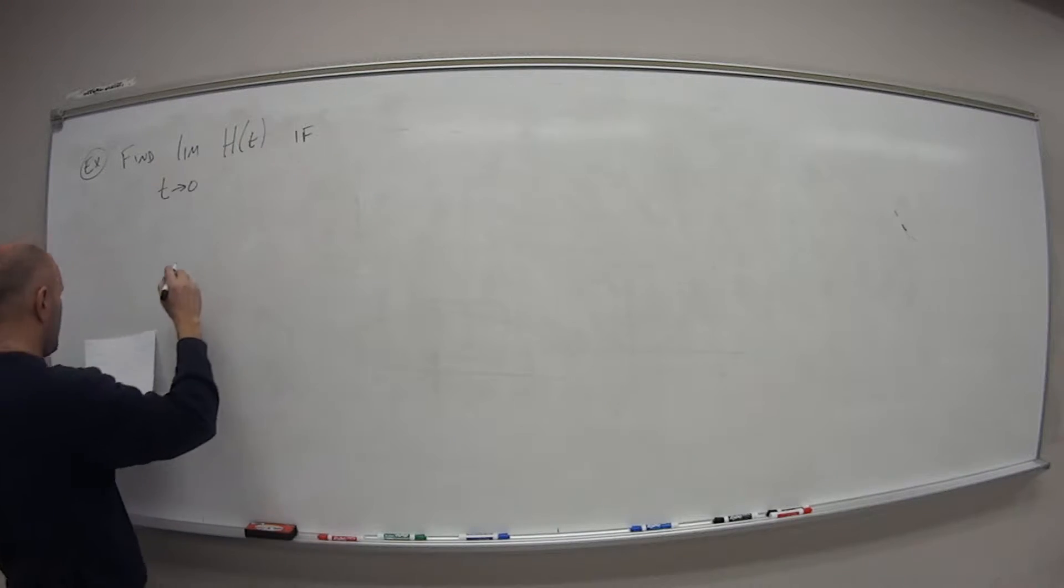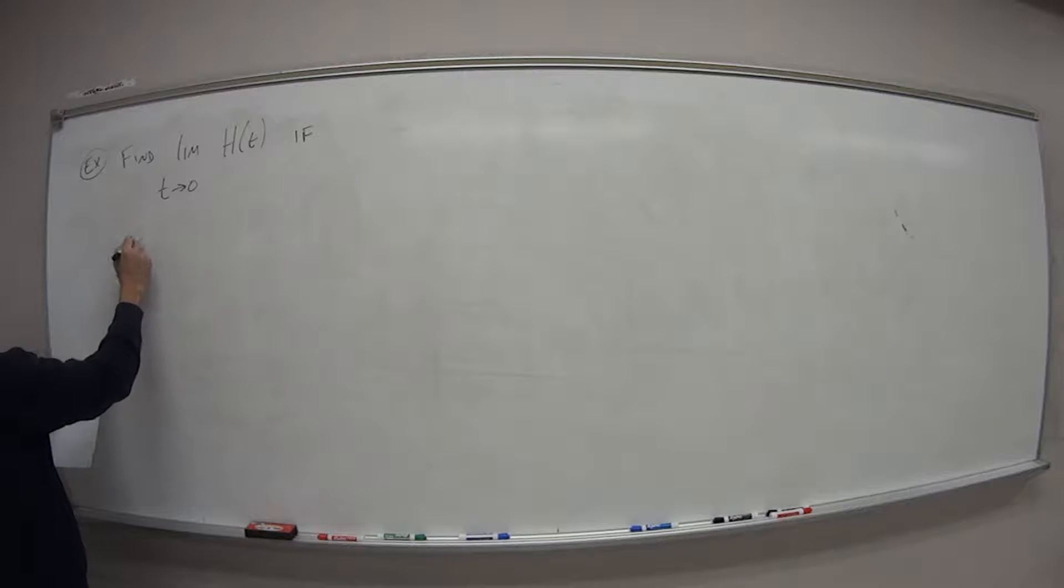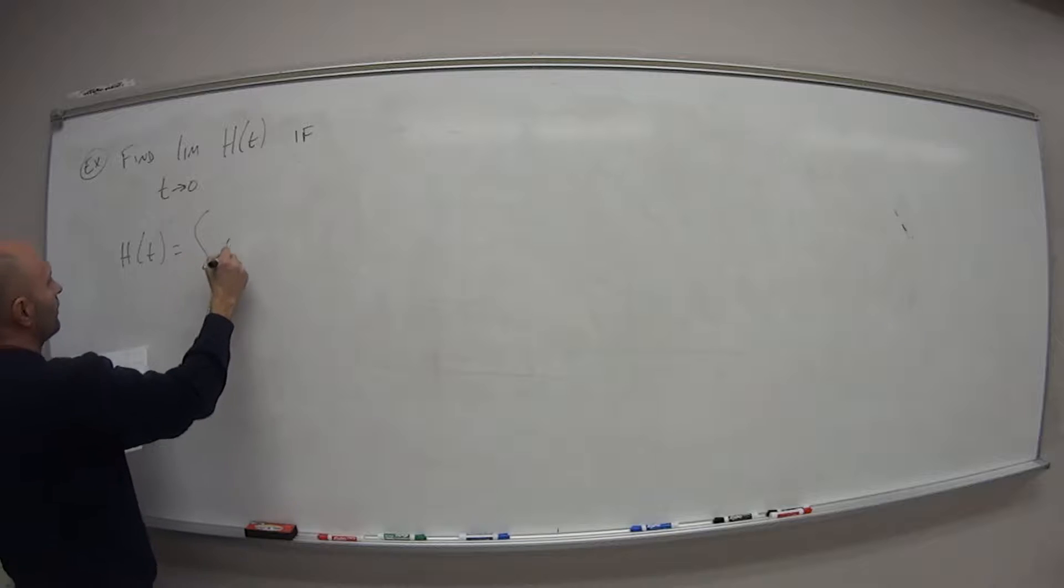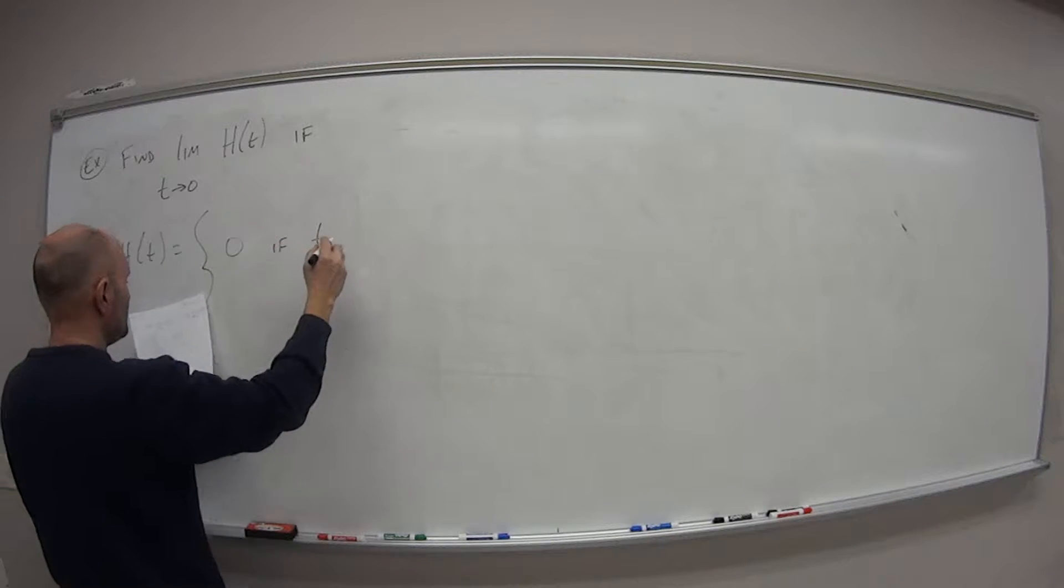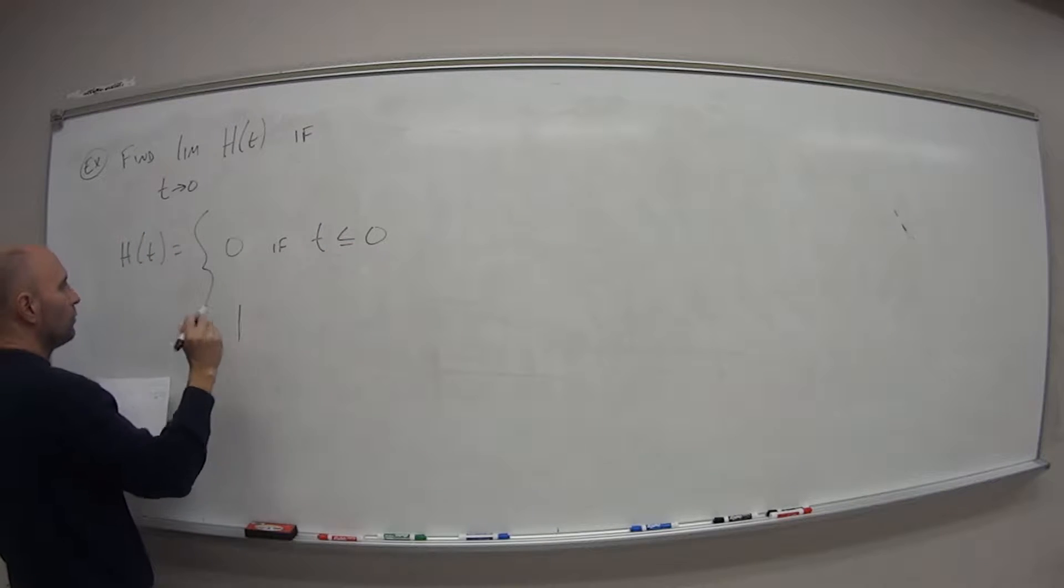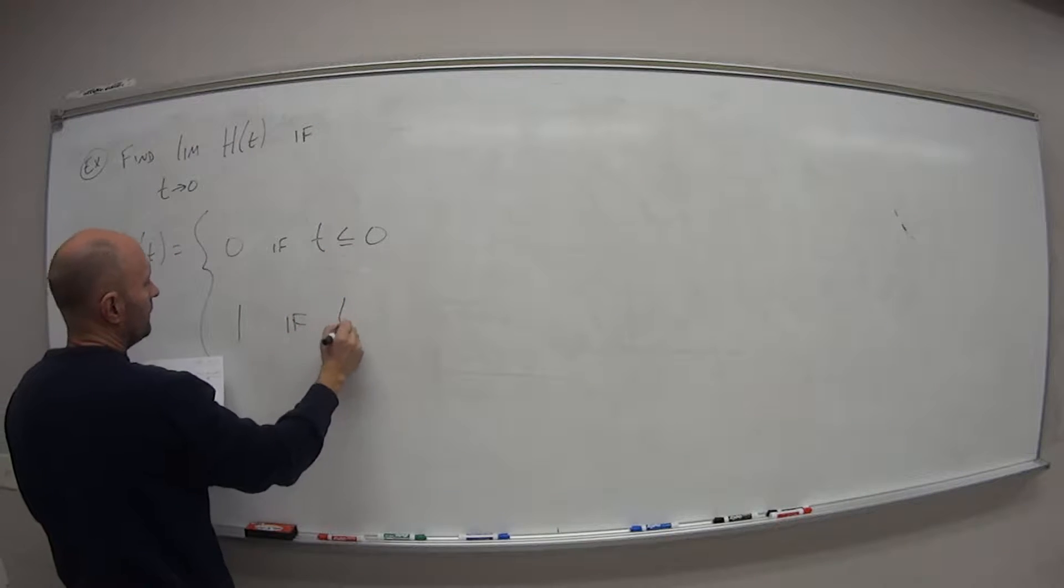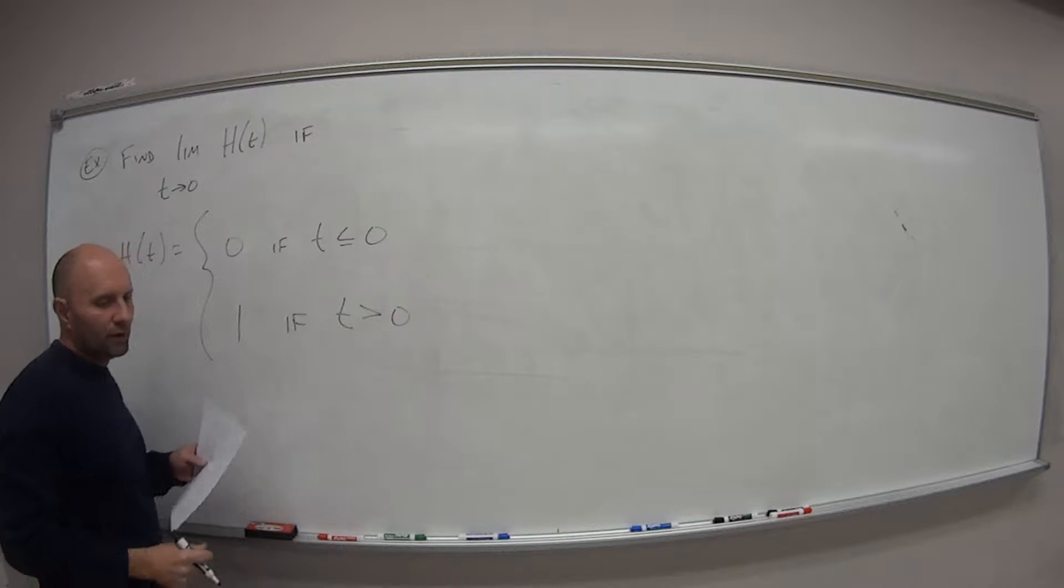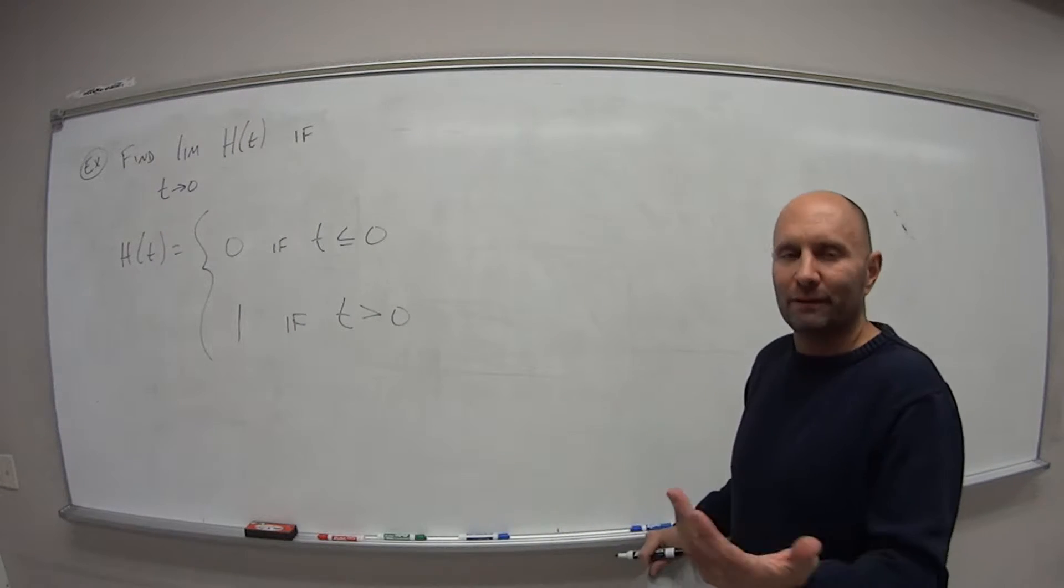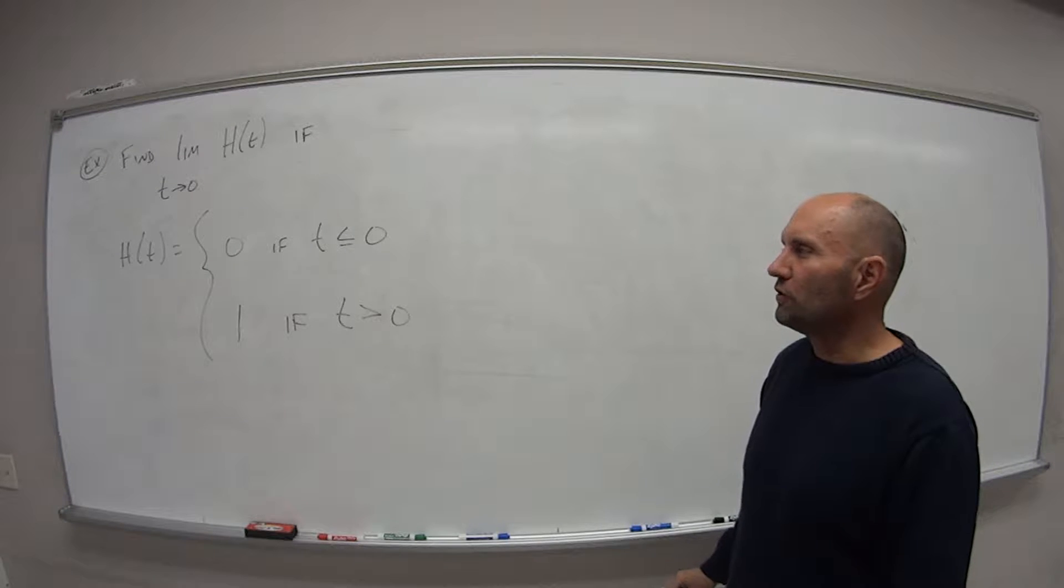But we want to find the limit as t goes to 0 of the function h of t. And that's if we have the following: h of t is equal to 0 if t is less than or equal to 0, and it's equal to 1 if t is greater than 0. So this 0 and 1 is talking about like current. That's why I sort of reference the electrical engineers there.